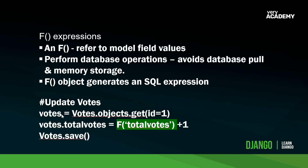Django uses the F object to generate an SQL expression that describes an operation at a database level, which can then be performed at a database level. When Django finds an F expression, it overrides the standard Python operators and creates an encapsulated SQL expression which can be executed on the database — in our example, incrementing the database field total_votes by one.